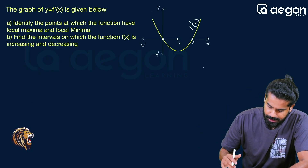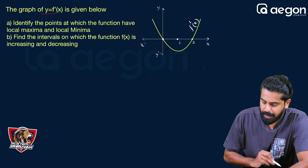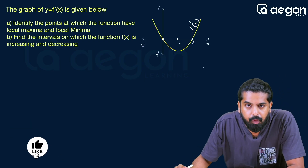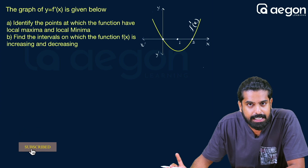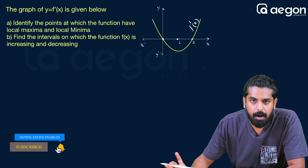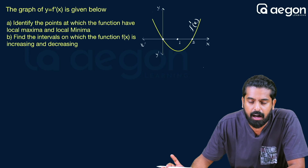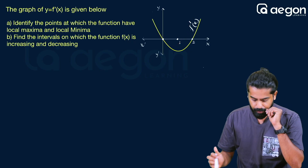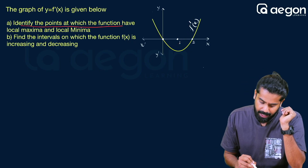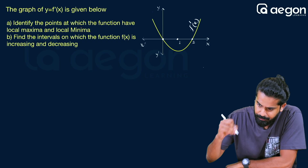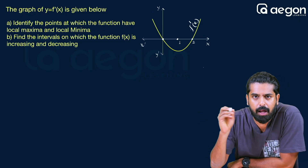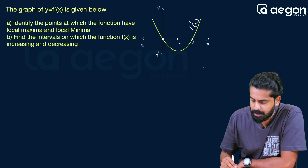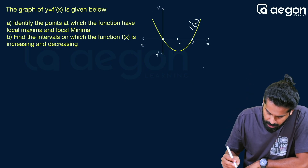Next question. The graph of y = f'(x) is given below. This graph is a derivative graph — not the function graph, but the derivative graph. If we discuss the NCERT questions, we can see a different pattern. The question asks: identify the points at which the function has local maxima and local minima, and identify the intervals on which the function is increasing and decreasing.